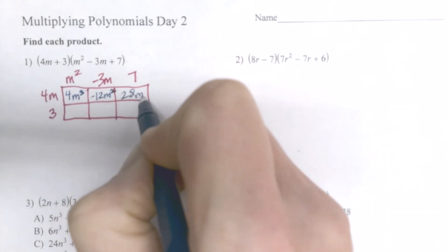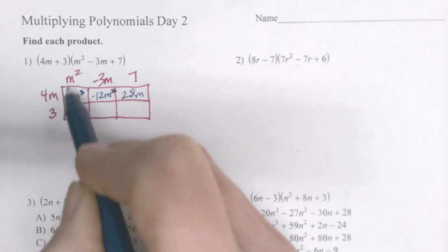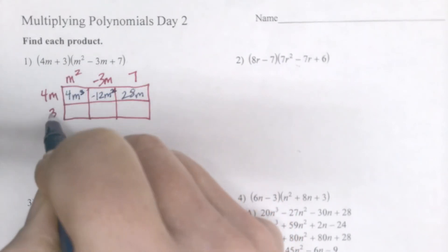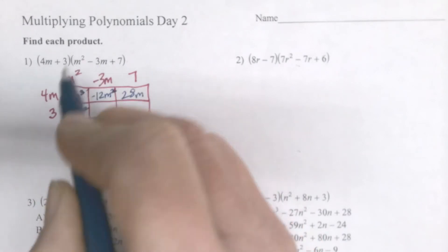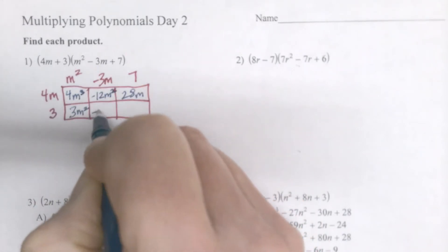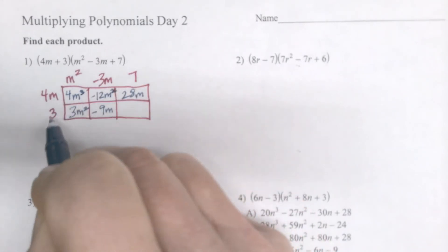And then I'll go down in the next row and do the same thing. Three times m squared, three times negative 3m, and three times 7.